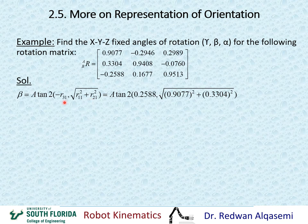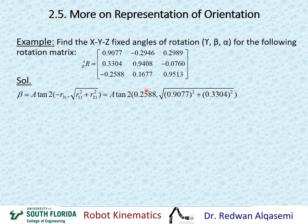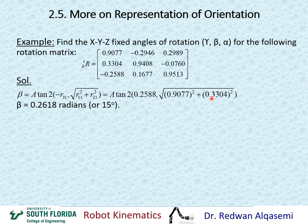R31 is the element in row 3, column 1. Taking the negative of R31 (negative of a negative gives positive), computing R11² + R21², and evaluating the atan2 gives beta = 0.2618 radians, which is 15 degrees.